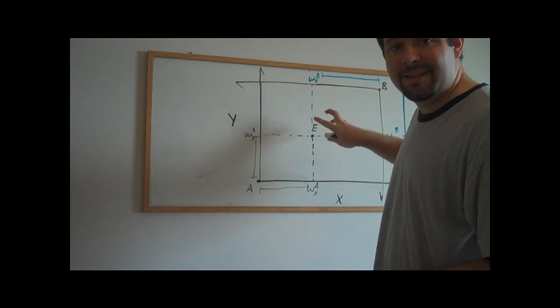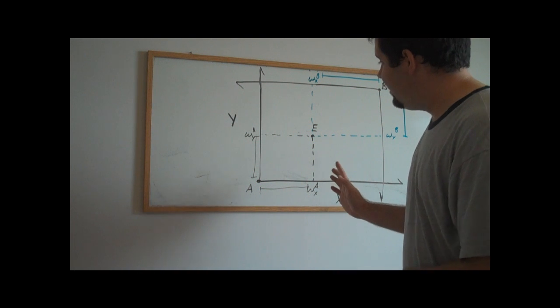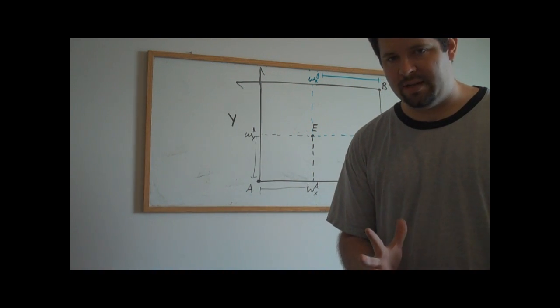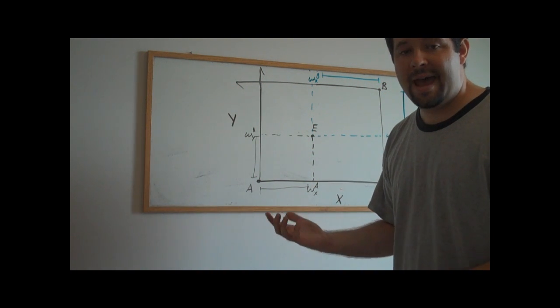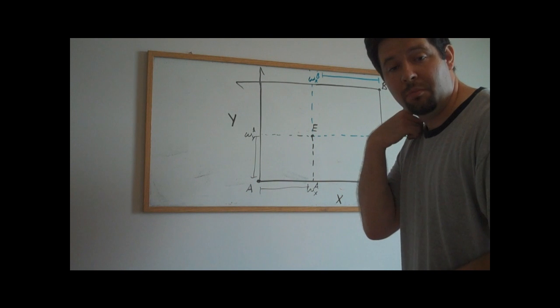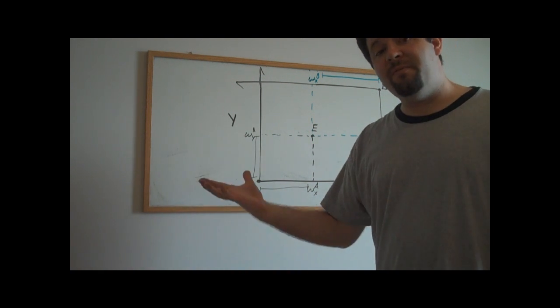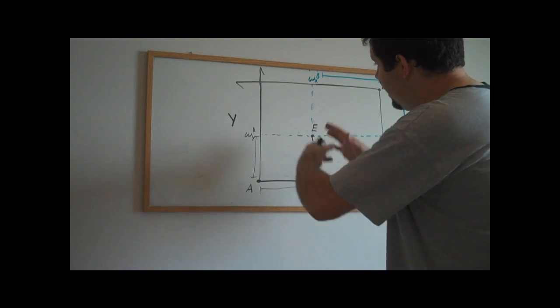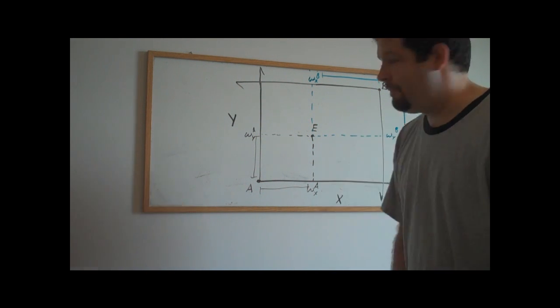Any point in this box is going to be what's called an allocation, and it will tell us how much of each good each individual has in that particular consumption bundle. And so, we can talk about points here as what are called feasible allocations. They're allocations that we could actually implement given the resources in this economy that this economy was endowed with.